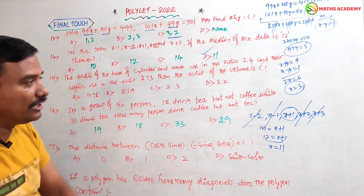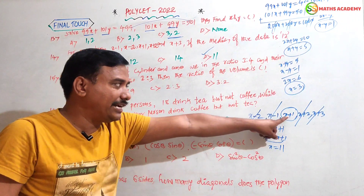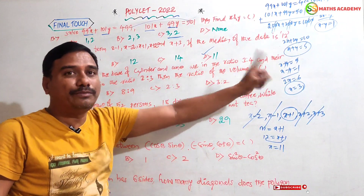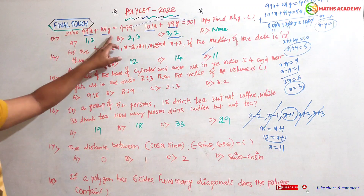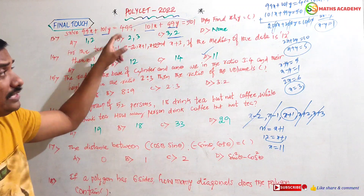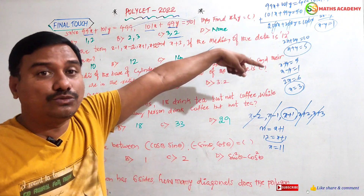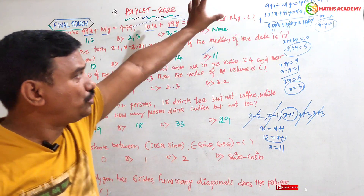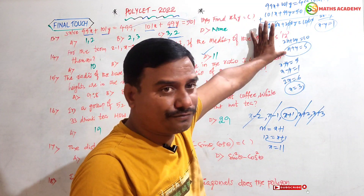The middlemost value is called the median. So x + 1 = 12 means x = 12 - 1 = 11. For this question, no complex formula is needed — identifying the middle term directly is sufficient.